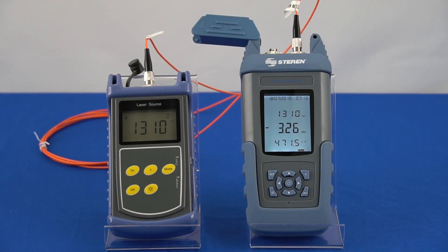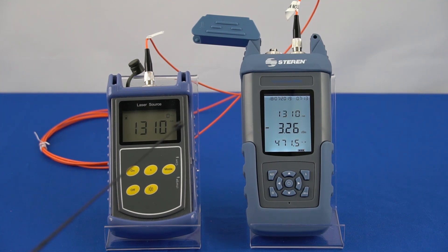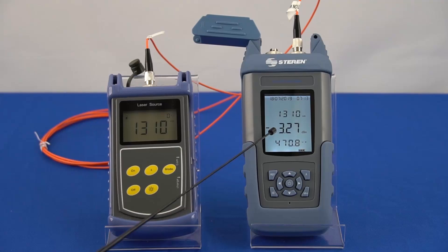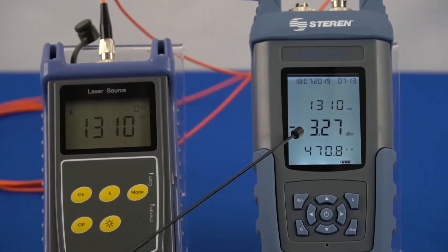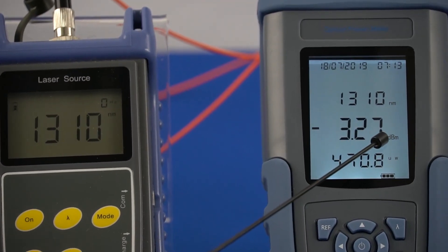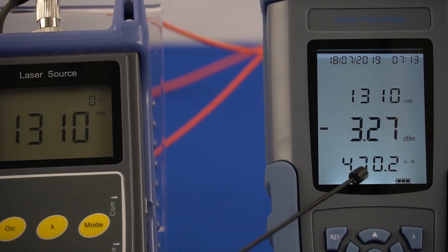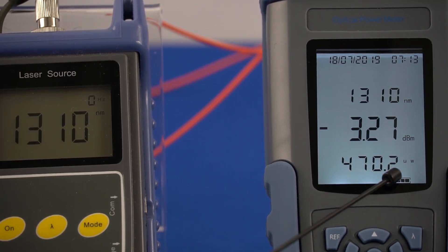Verify that the power measurement on the optical power meter meets your power level from the source. In this case, our laser light source outputs around negative 3.27 dBm, which is equivalent to 470 microwatts.